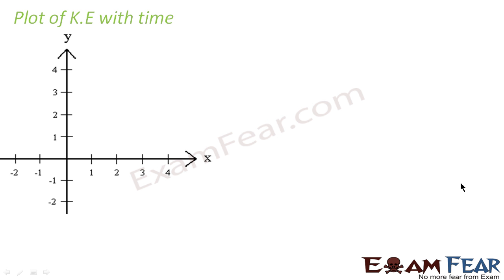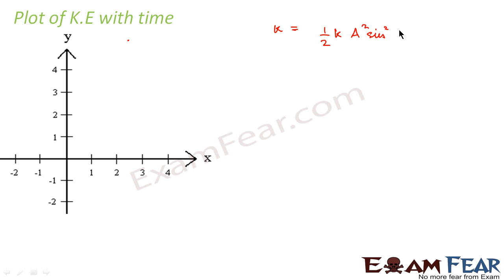Now let us plot kinetic energy with time. We will use the same technique which we used while plotting the graph of displacement with time. We know that kinetic energy equals half k a squared sine squared(omega t + phi), so let us calculate the values of kinetic energy at different instances of time.